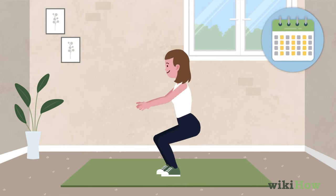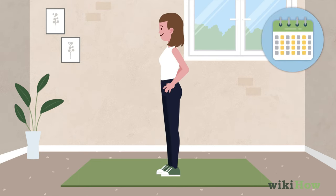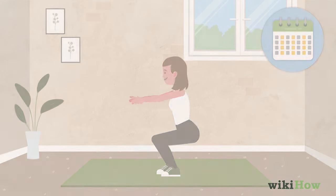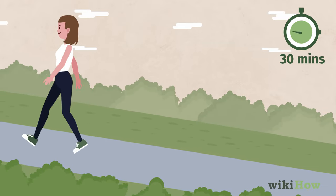Do your butt workout three times a week with a rest day in between each workout so your muscles have time to heal and grow. Walking or running on an incline for 30 minutes every day is also a great way to work out your butt muscles.